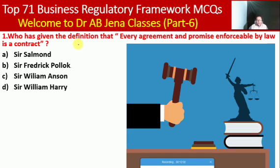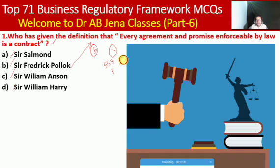The first MCQ: who has given the definition that 'every agreement and promise is enforceable by law is a contract'? Whether Sir Salman, Sir Frederick Pollock, Sir William Anson, or Sir William Harry. Here B is the right option — Sir Frederick Pollock. For your kind information, kindly visit the playlist of SSB PGT Commerce and UGC NET JRF series, where I have already discussed in detail the concepts and meaning for Business Law.